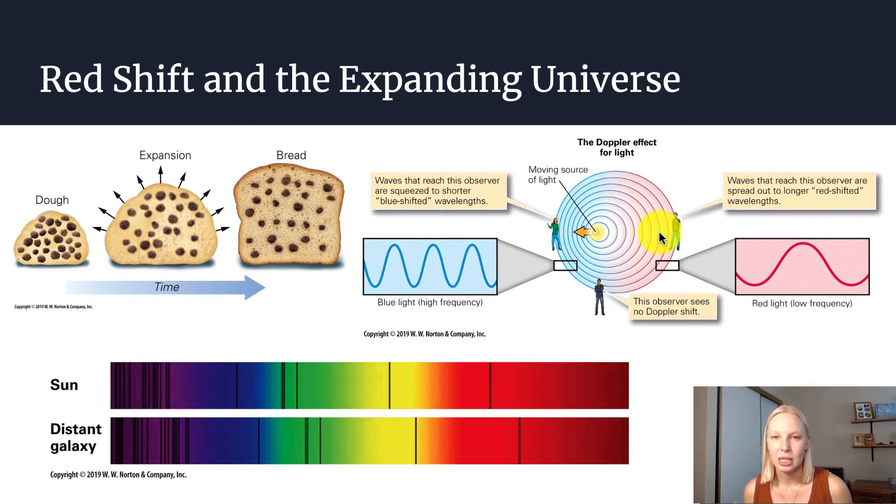But if we look at distant galaxies, we see that those galaxies are actually shifted toward the red end of the spectrum.